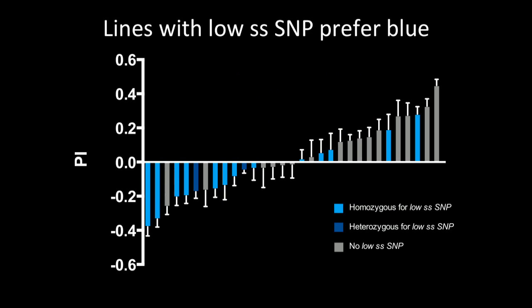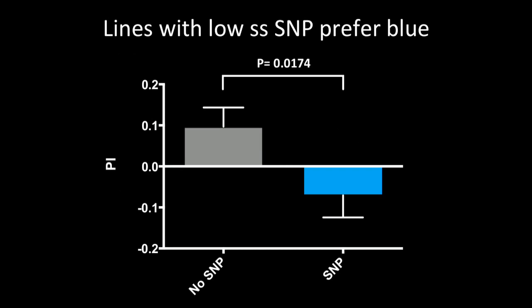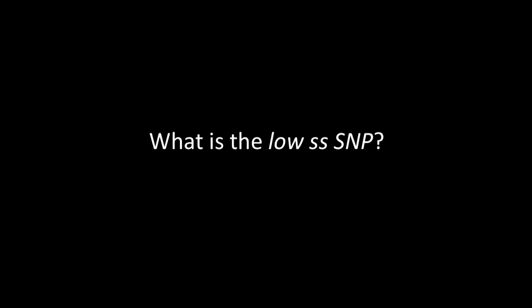And indeed that's what we see. Again, the lines that are homozygous for the low spineless SNP are in light blue, and they tend to have a negative PI, suggesting that they prefer blue light. And this is shown again just in a different representation. There's a significant difference between lines that do and do not contain a SNP in terms of their visual preference.